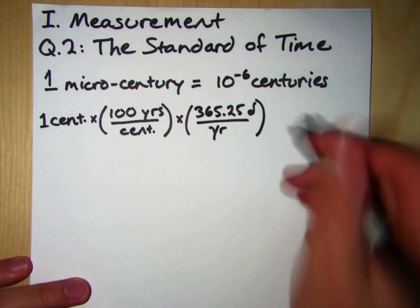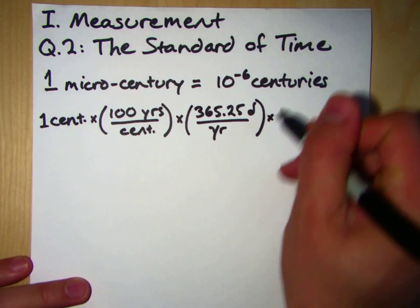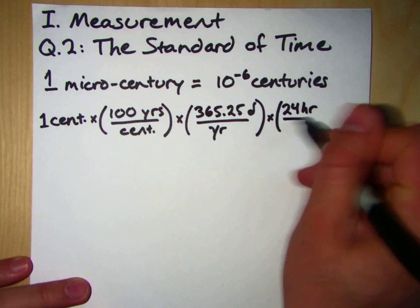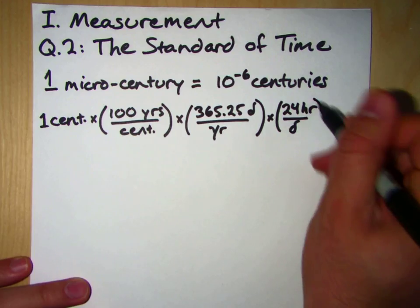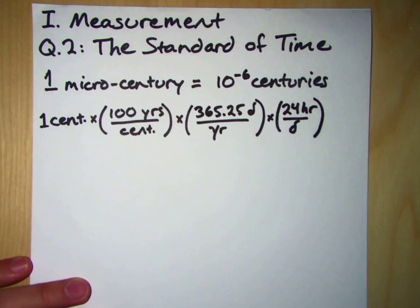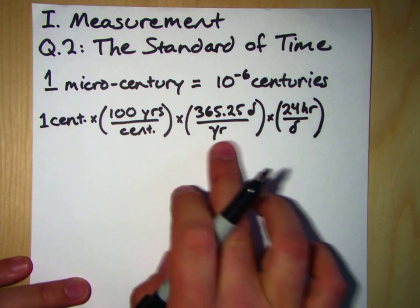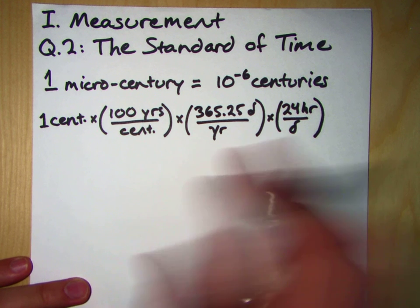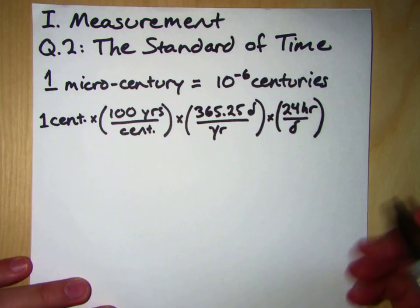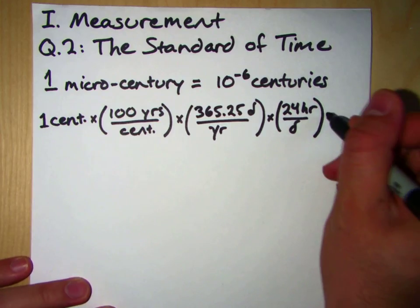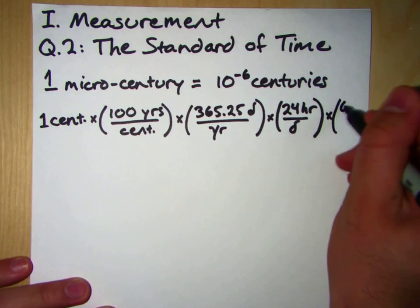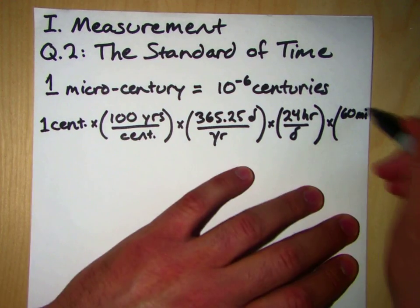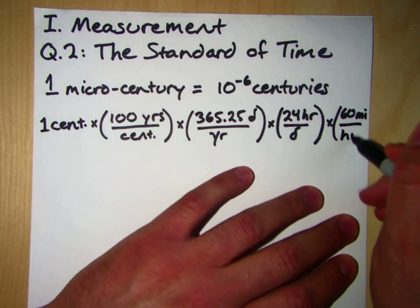Okay, so we've got it down to days. What about hours? Well, we know there are 24 hours in a day. Remember, these are all multiplications of one here. 100 years in a century, 365.25 days in a year, 24 hours in a day. What about minutes? Minutes in an hour? Well, that's pretty straightforward too. 60 minutes in an hour.